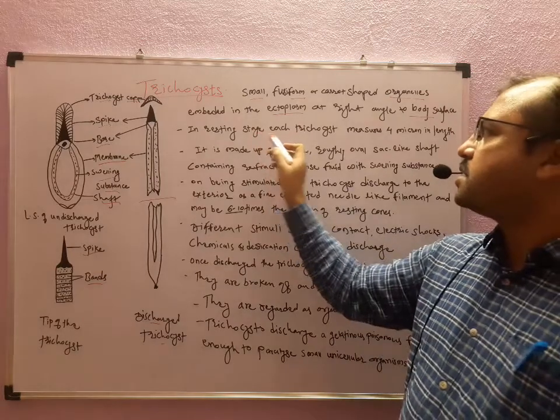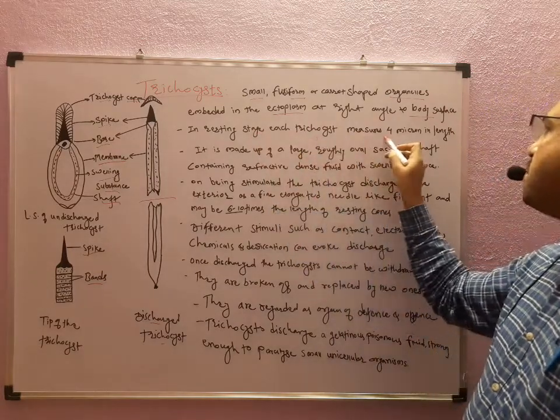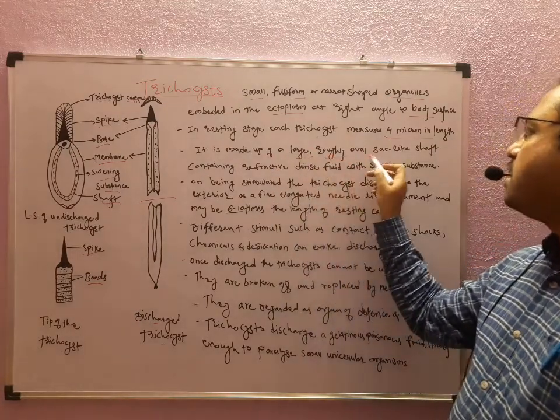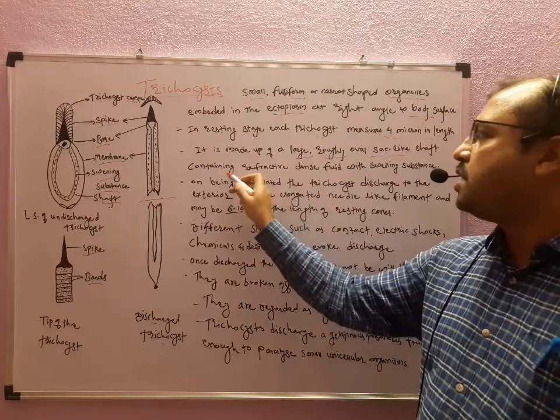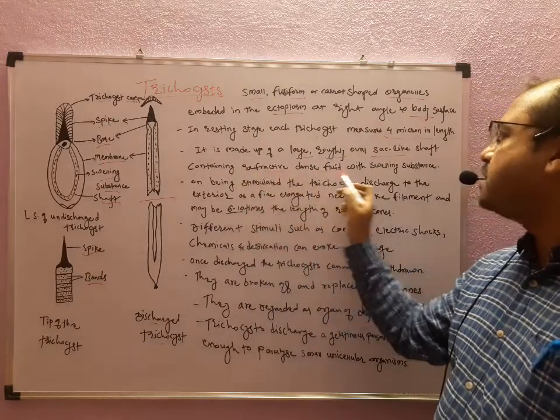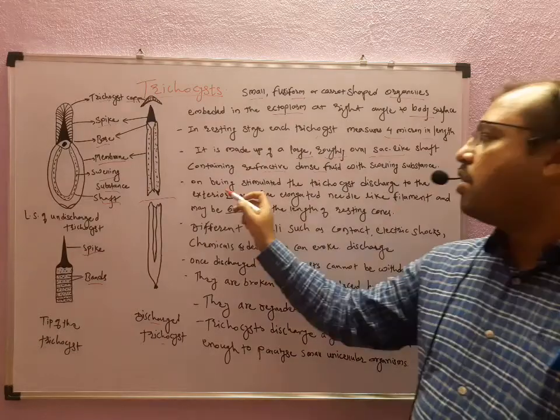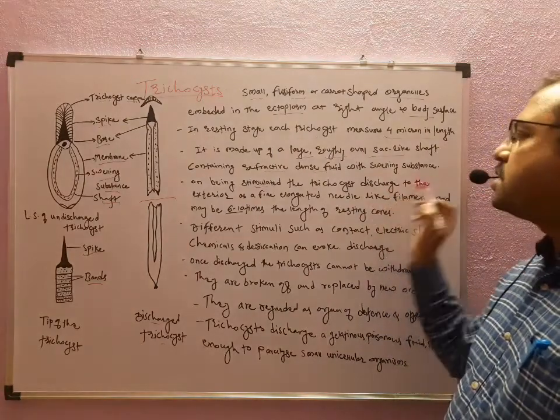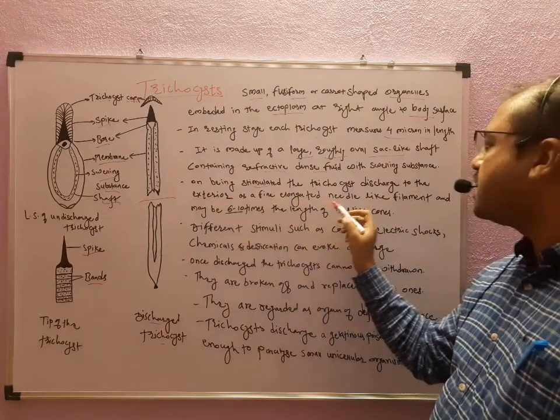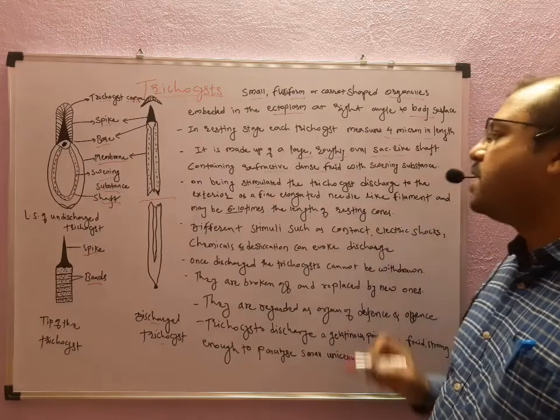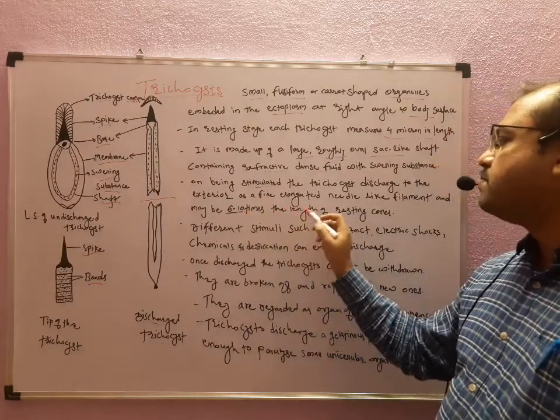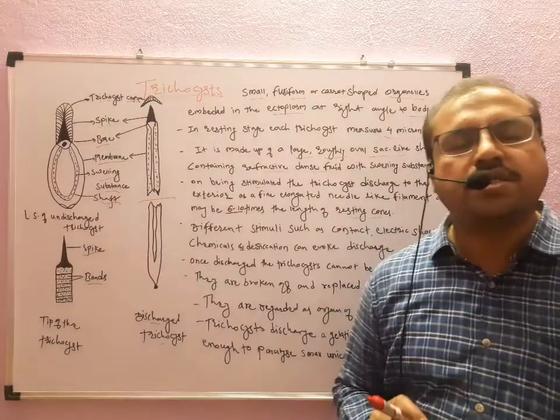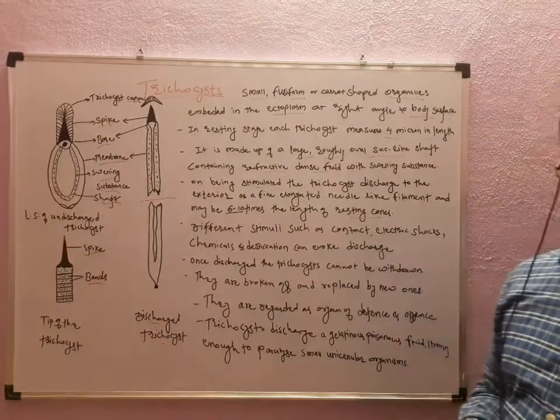Embedded in the ectoplasm at right angles to the body surface. In resting stage, each trichocyst measures four microns in length. It is made up of a large, roughly oval, sac-like shaft which contains the refractive dense fluid with a swelling substance. On being stimulated, the trichocyst discharges to the exterior as a fine elongated needle-like filament, and maybe six to ten times the length of resting cone.